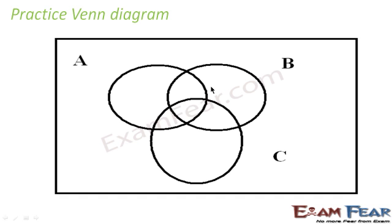If you want to find A intersection B, that is the common area between A and B. This common area between A and B is nothing but A intersection B.